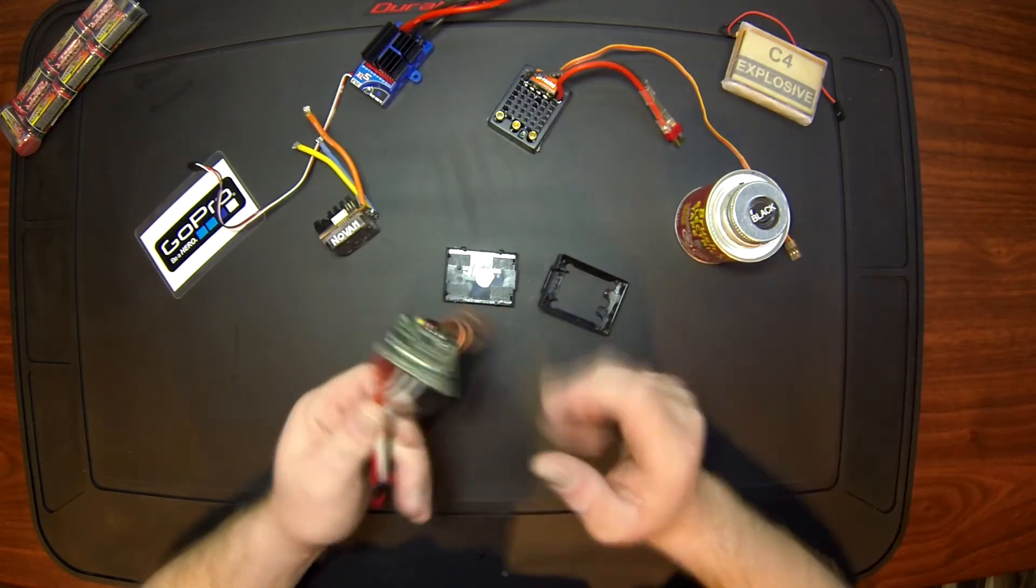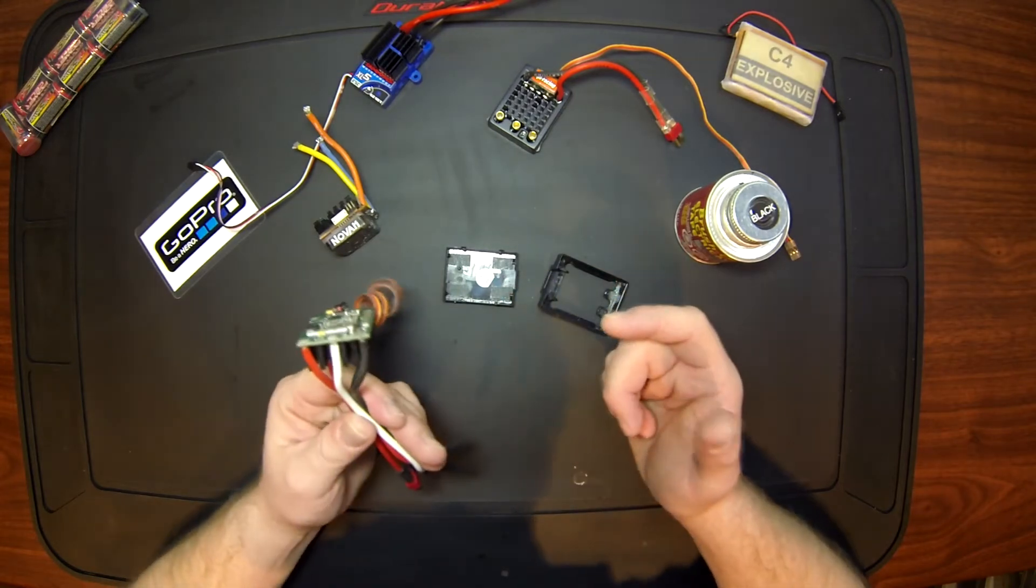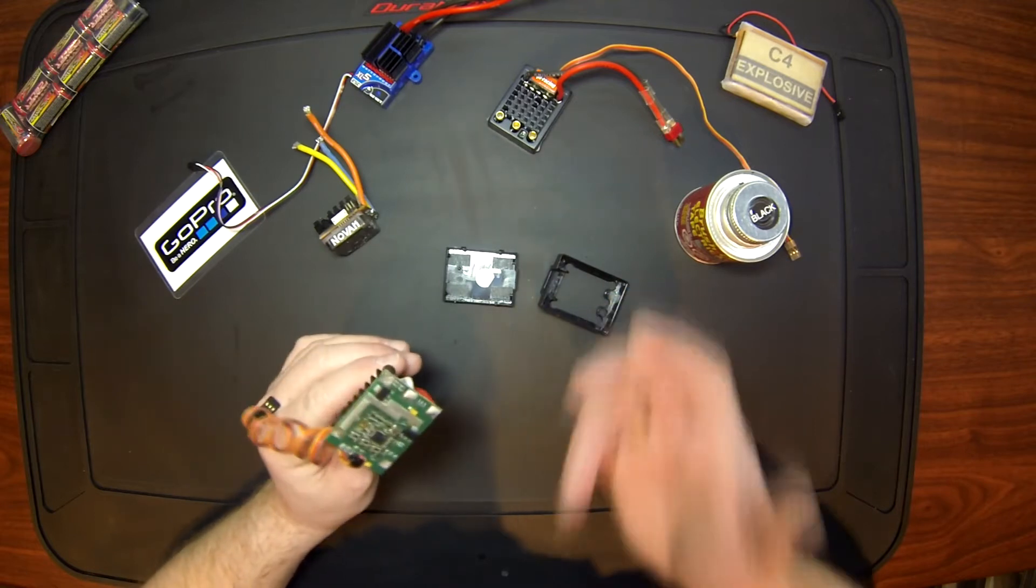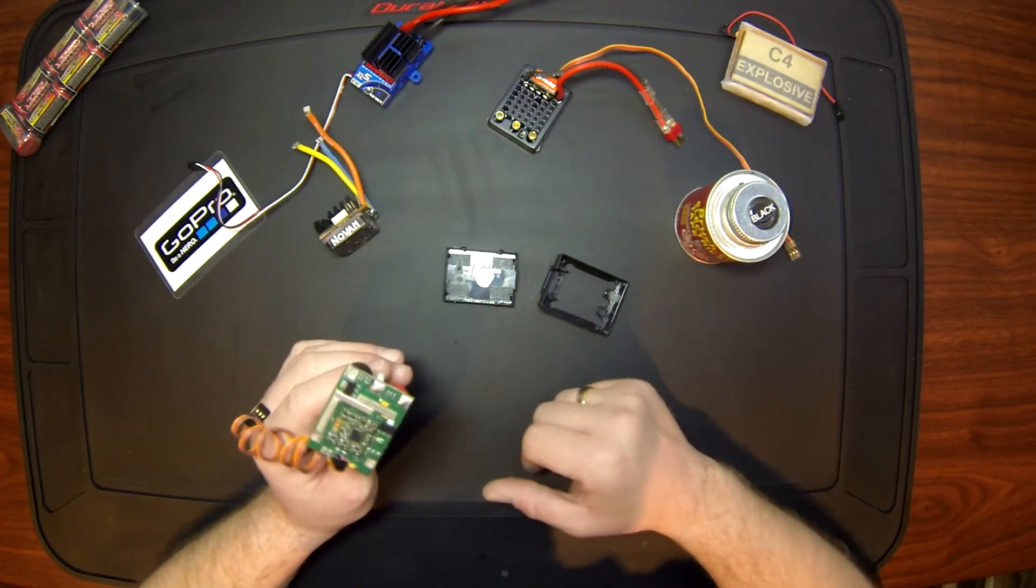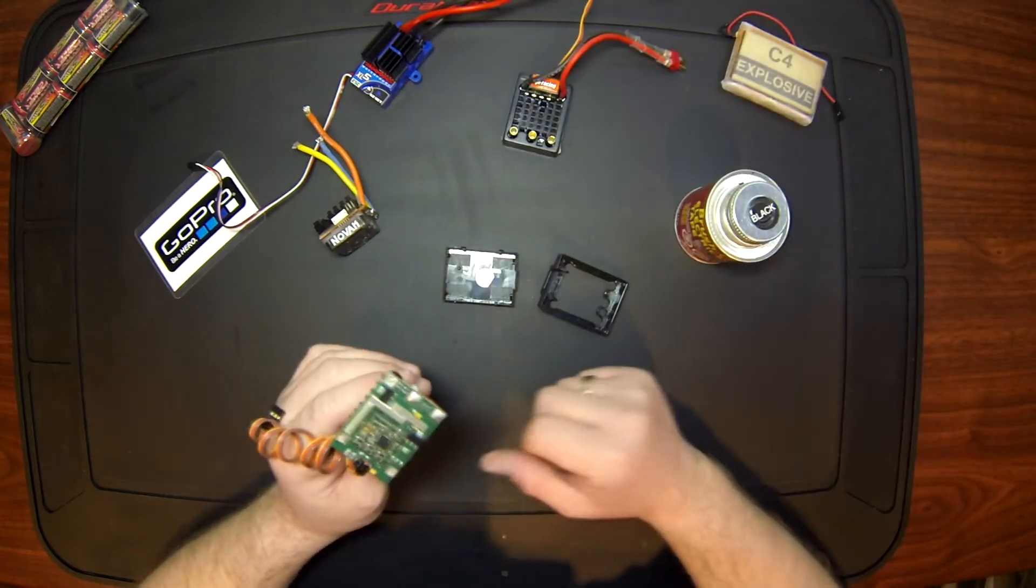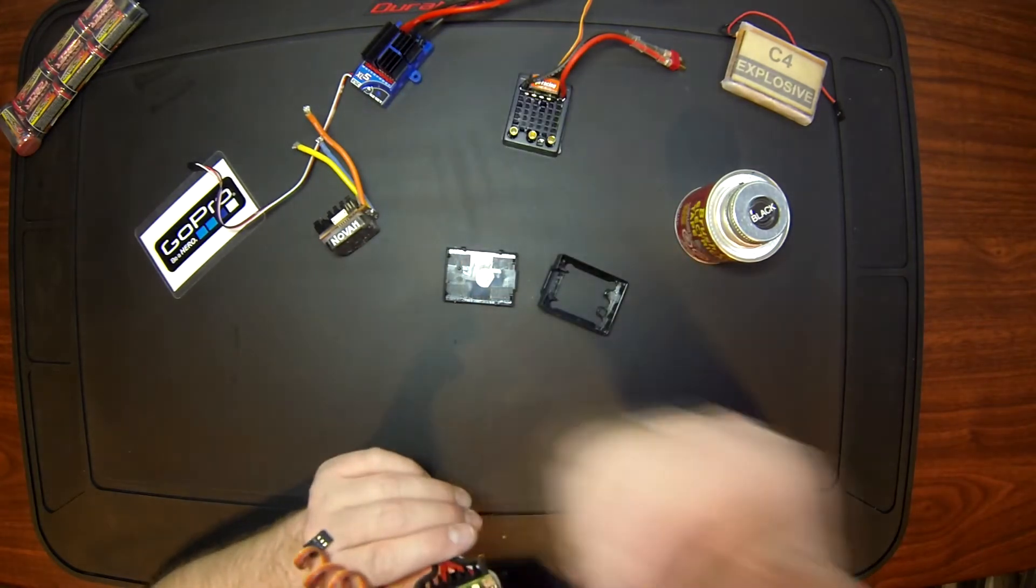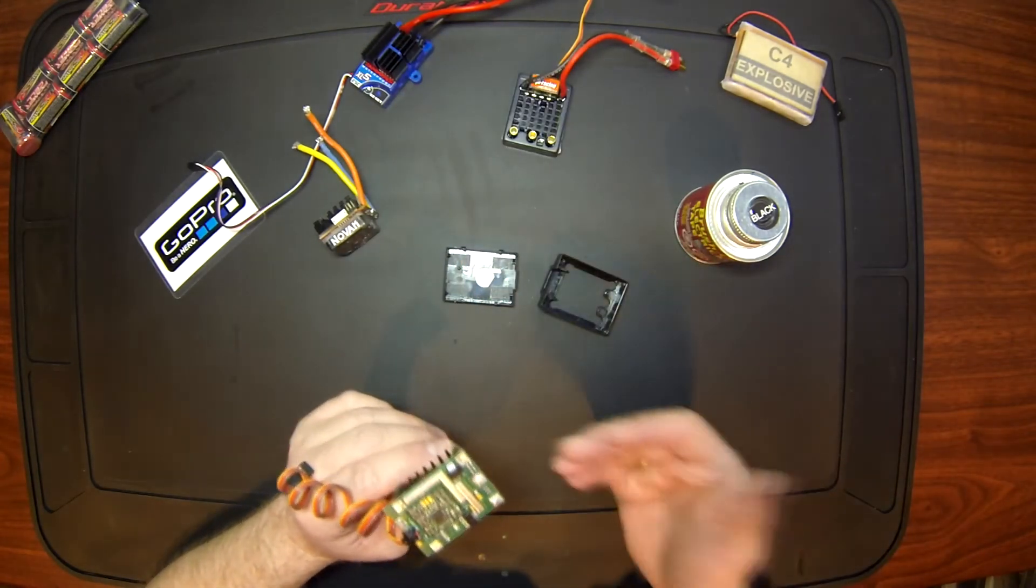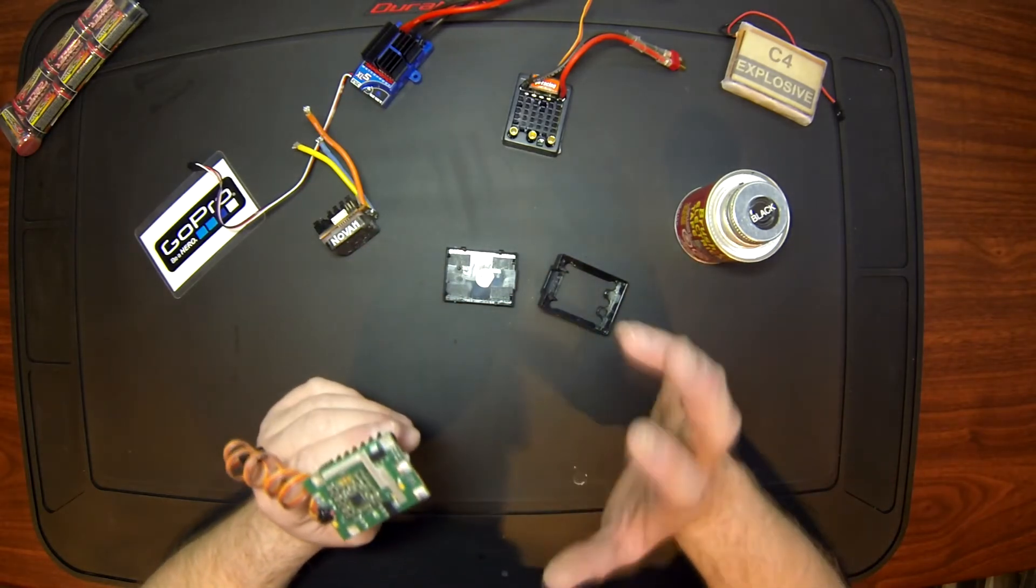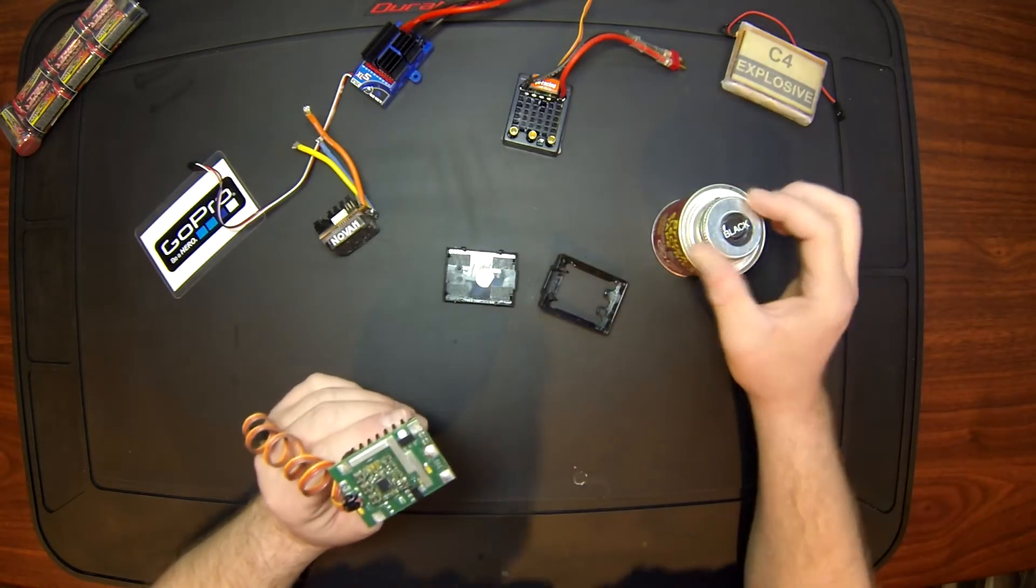You have your speed control. This is a Castle, a new Castle that they're out right now. They are water resistant. For you guys that have the old system and want to waterproof them, this is one of the new ones. Waterproof Castles are basically the same thing as the Traxxas ones. If you want to do an old Castle, Novak, Dynamite, any speed control out there with liquid tape, you'll be able to.